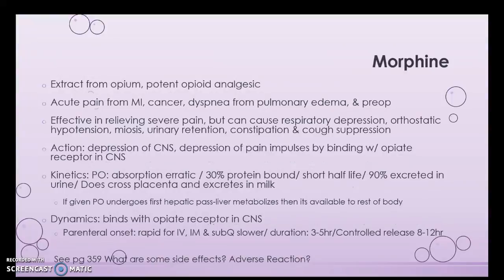Morphine is a big one you're going to use — you'll find it on page 359. Look into the side effects and adverse reactions. It's an extract from opium and it's very potent. It's effective in relieving severe pain but also causes respiratory depression and hypotension. If given PO it undergoes the first hepatic pass, but it's often given IV, so the patient gets the full dose. Many patients have problems with nausea and vomiting, so it's often followed with IV Zofran because it's a powerful opioid.